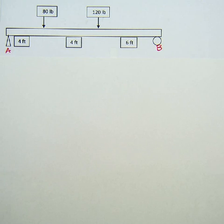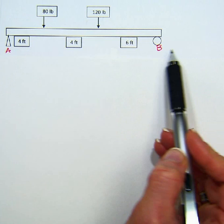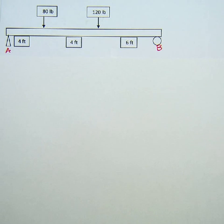As you can see in this example, I have already labeled the pen A and the roller B. And the first thing I need to do is draw a free body diagram.